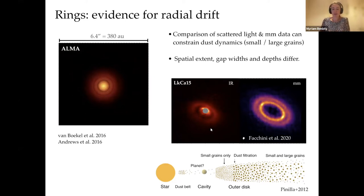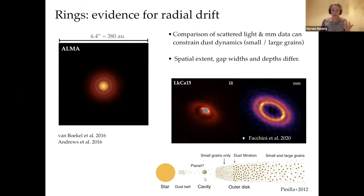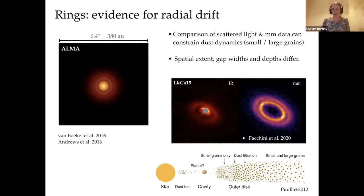An important result when combining these tracers is that the small grains are always located inward of the large grains. So this ring of LkCa 15 is actually located inward of the bright millimeter ring. We also have small grains in the inner disk, up to where we can see them with the coronagraph. This spatial segregation in dust size is what we expect with a companion: a planet creates a pressure maximum where large grains are trapped, but small grains can still drift inward through the cavity into the inner disk.